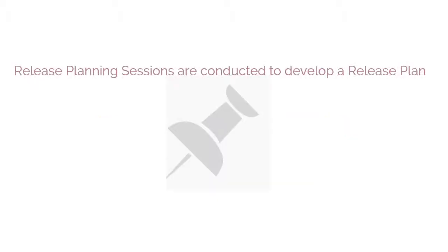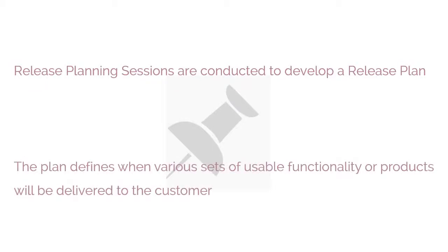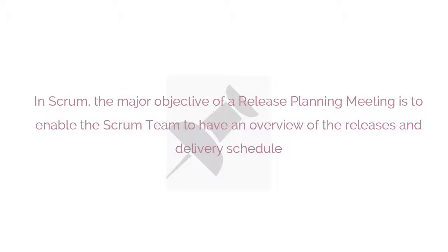The first tool used in this process is the Release Planning Session. Release Planning Sessions are conducted to develop a release plan. The plan defines when various sets of usable functionality or products will be delivered to the customer. In Scrum, the major objective of a release planning meeting is to enable the Scrum team to have an overview of the release and delivery schedule for the product they are developing, so that they can align with the expectations of the product owner and relevant stakeholders, primarily the project sponsor.